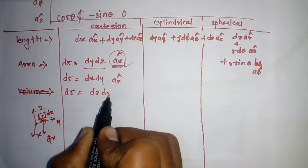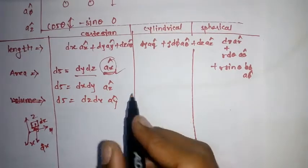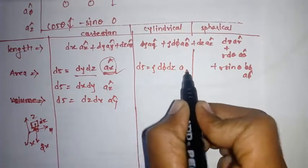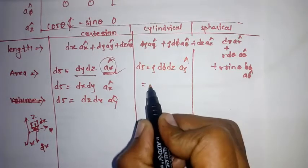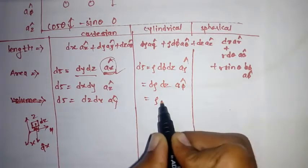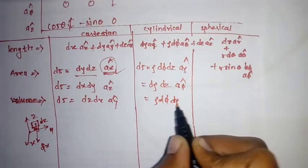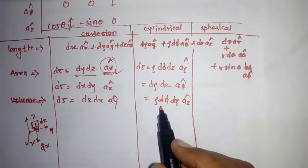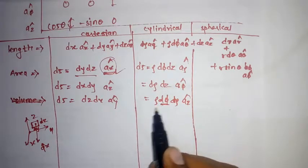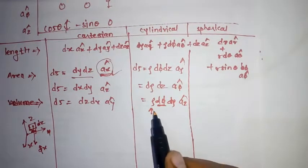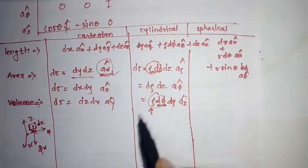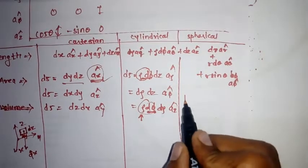In cylindrical, ds equals rho d_phi dz when a_rho is perpendicular. We also have ds equals d_rho dz a_phi, and ds equals rho d_phi d_rho a_z. Always remember: whenever d_phi appears, rho must always come with it. That is the trick to remember.